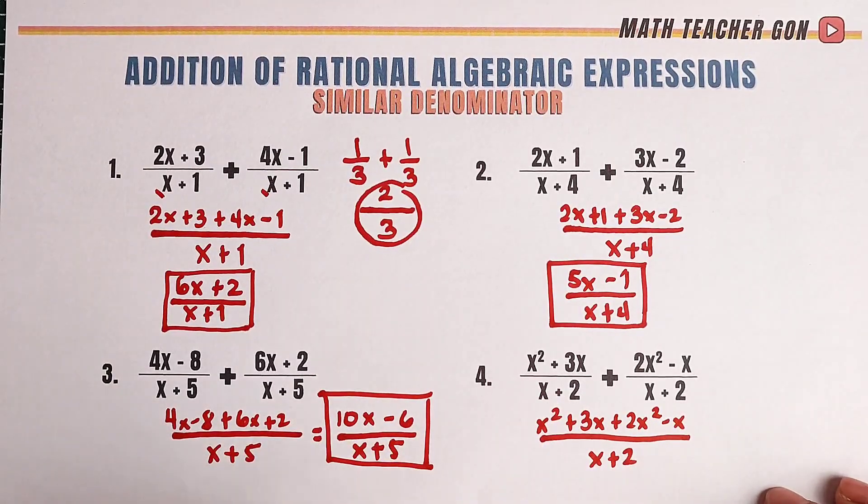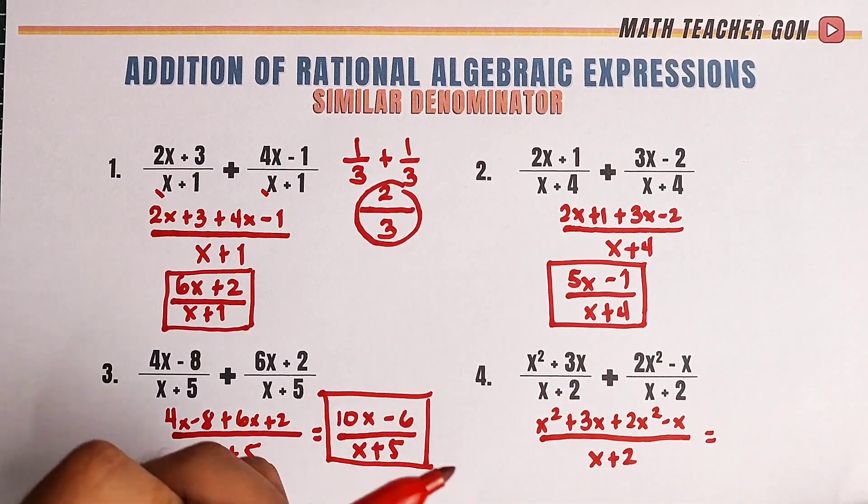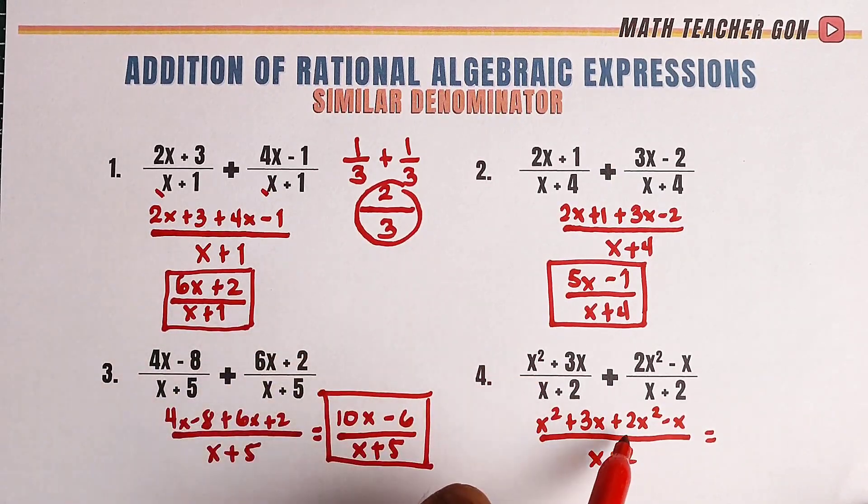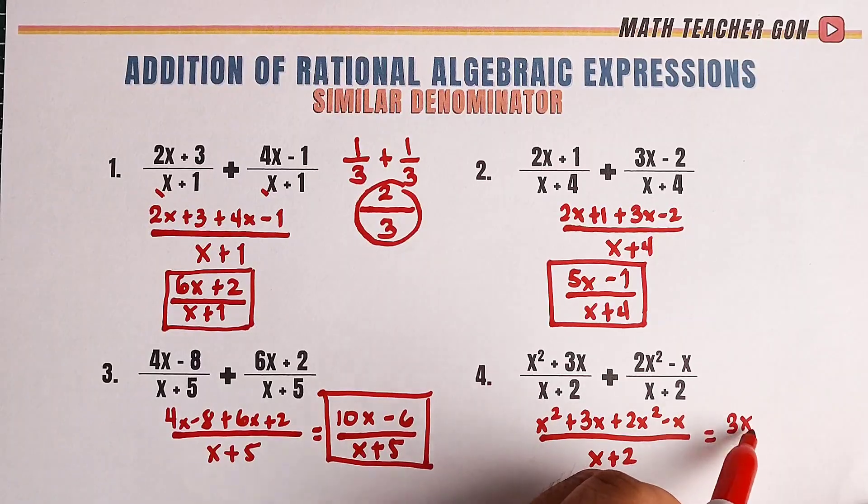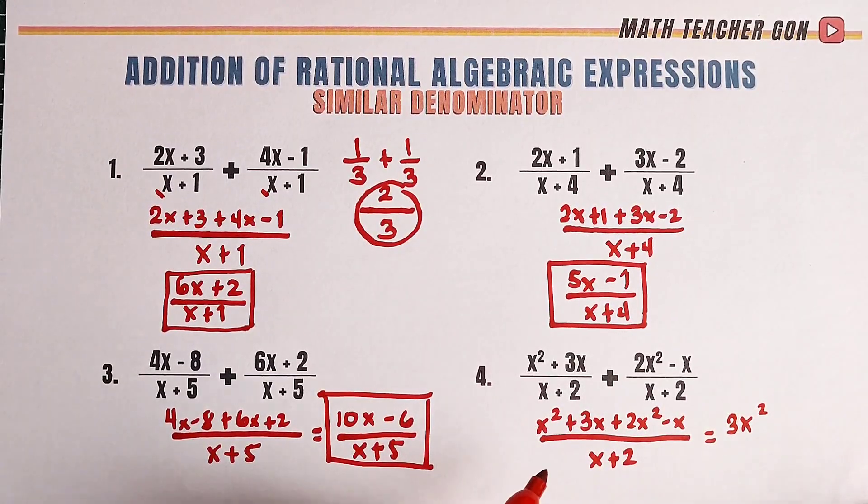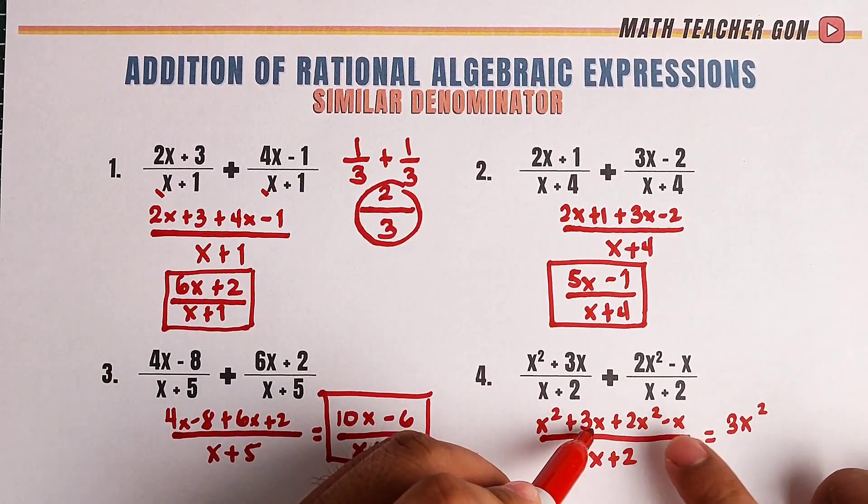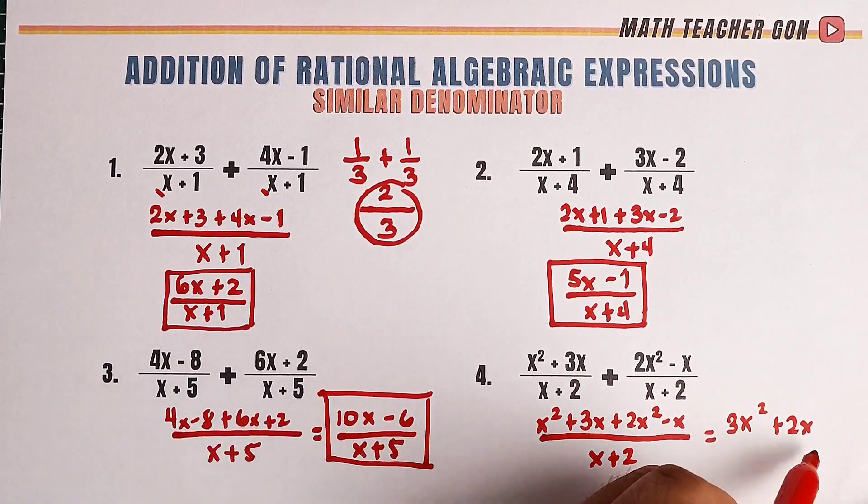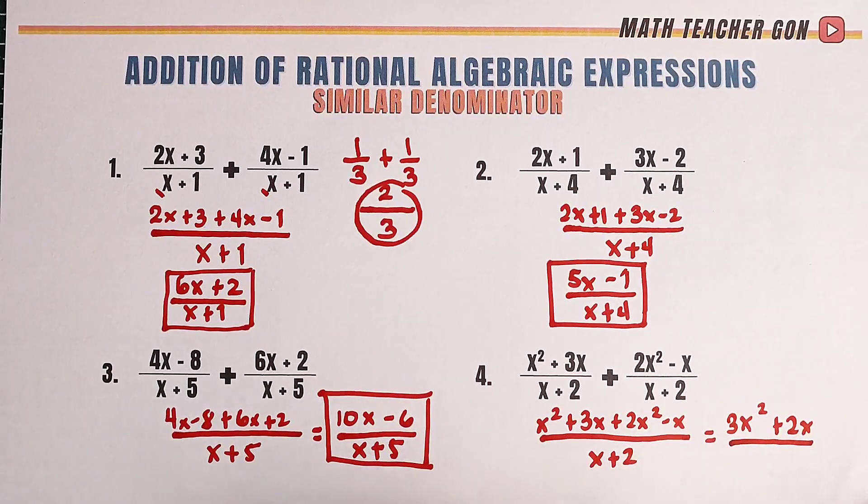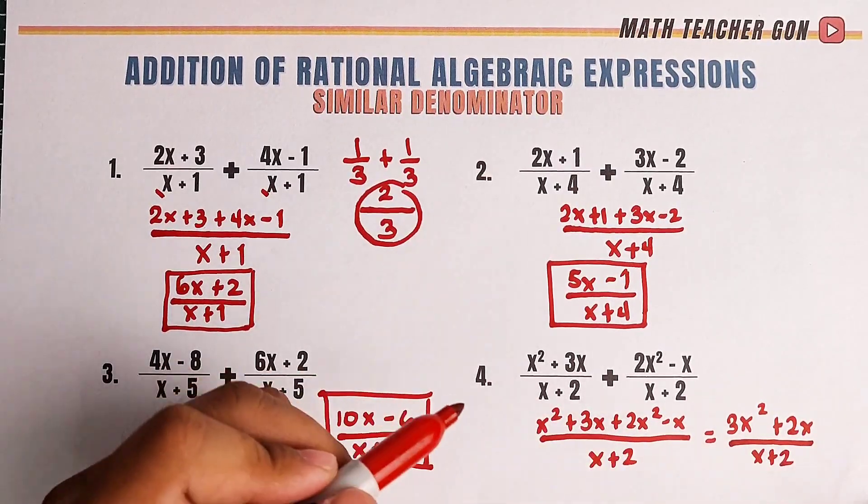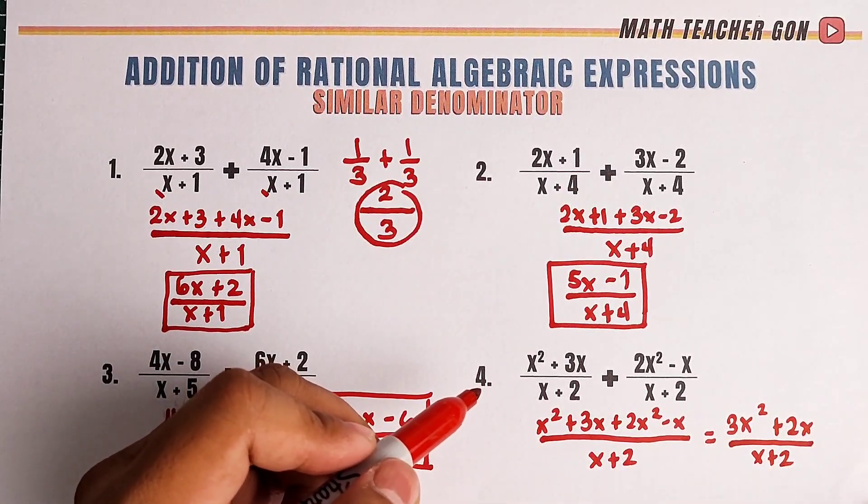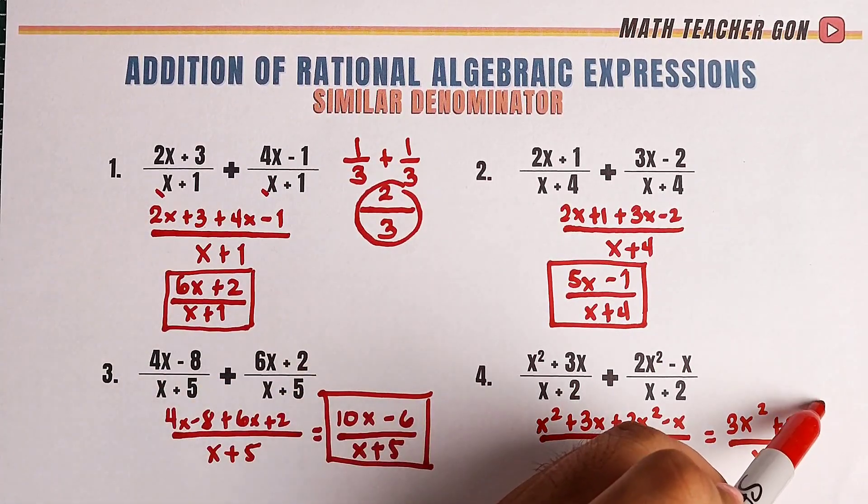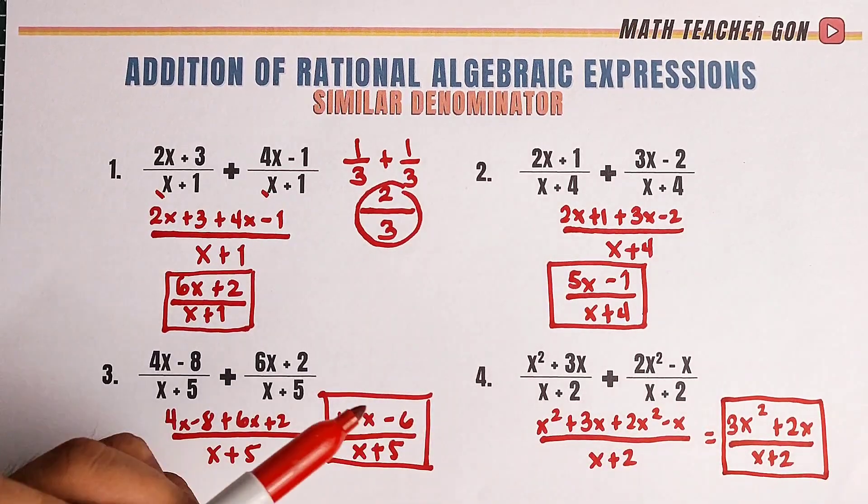Now, what we can combine here are those variables with the same exponents. x squared plus 2x squared, that would be 3x squared. Then next, we will combine this two, 3x and minus x, that would be plus 2x over x plus 2. Now, what we have here, can we factor out the numerator? No. So this is now the correct answer for number 4.